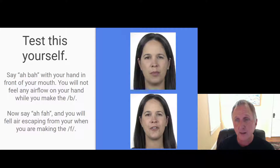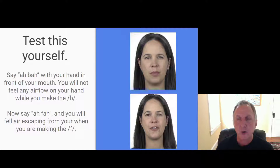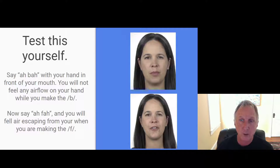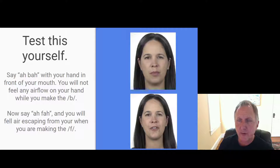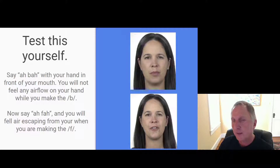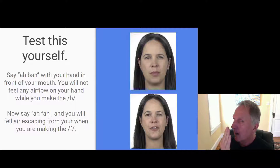You can test this yourself. Put your hand directly in front of your mouth and say 'ah-ba.' No air should come out while your lips are pressed together for the B — you'll feel a burst of air only when you open your lips. Now do 'ah-fa': during the F part, you should still feel air escaping and hitting the hand in front of your mouth.